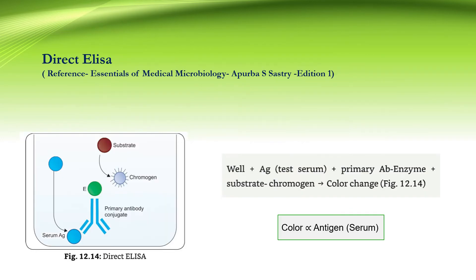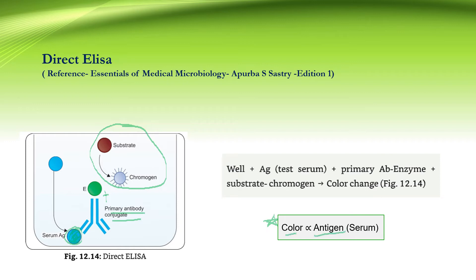In direct ELISA, microtiter wells are not pre-coated with antigen or antibodies. Test serum containing antigen is added to the wells and it becomes attached to the well plate by passive adsorption. After this, primary antibody labelled with the enzyme is added, and then the substrate chromogen system is added. The colour development is directly proportional to the antigen present in the patient serum.